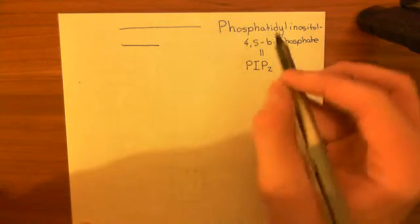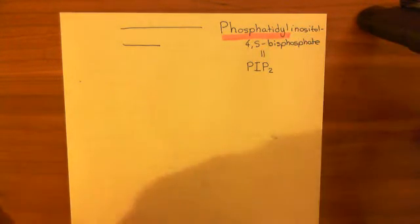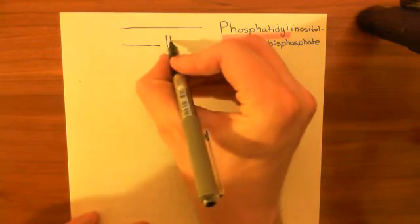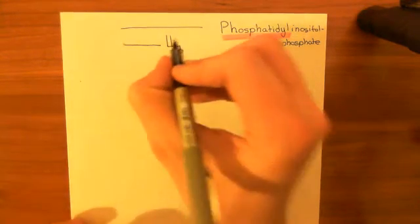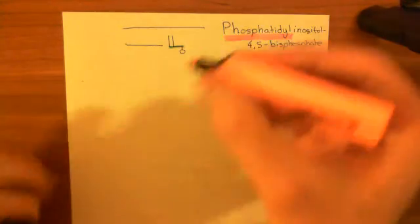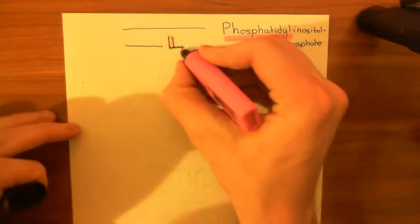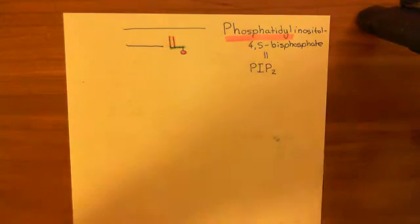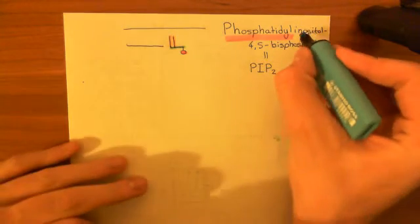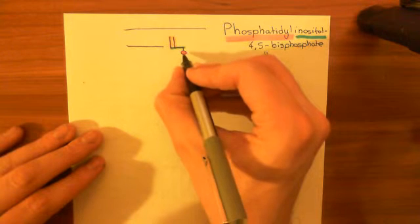Let's try and work out what this structure is, starting with the phosphatidyl part. That basically means you've got a phosphatidate molecule, so let's draw one. It's just a phospholipid. Here's our glycerol in green. Our long-chain carboxylic acids in orange are esterified to the first and second hydroxyl groups of the glycerol molecule. And here's our phosphate group in pink. Now we need to stick this phosphatidyl group onto an inositol molecule, so we need to discuss what inositol is.